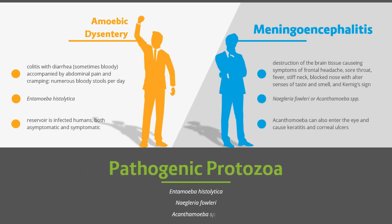This species of pathogenic protozoa also infects humans as its reservoir, and the human might even be asymptomatic. For meningoencephalitis, there is a destruction of the brain tissue and may cause the infected human to present with frontal headaches, a sore throat, fever, a stiff neck, blocked nose, altered taste and smell, and Kernig's sign, which is a pain or spasm accompanying a maneuver denoting a positive sign for meningitis. This disease is caused by either Naegleria fowleri or species of the genus Acanthamoeba. If Acanthamoeba infects the brain, it can also enter the eye and cause keratitis and corneal ulcers.